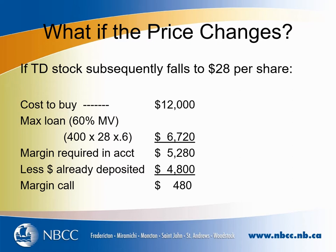This means Leslie must place $480 additional dollars in her margin account to keep the margin buy open. If the share price had risen above $30 rather than falling below $30, the calculation would have shown what we call excess margin — money in the margin account in addition to what needs to be there. This means Leslie could take that excess amount out of her margin account if she chooses, keeping in mind that if the price of the shares drops, she would then have a margin call to provide more funds.